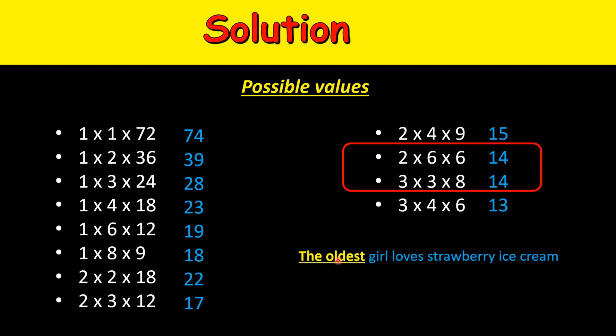But in the first case, 2, 6, 6, there are two older girls with the same age. So the remaining possibility is 3, 3, 8. There is a unique oldest girl, and that's the answer.